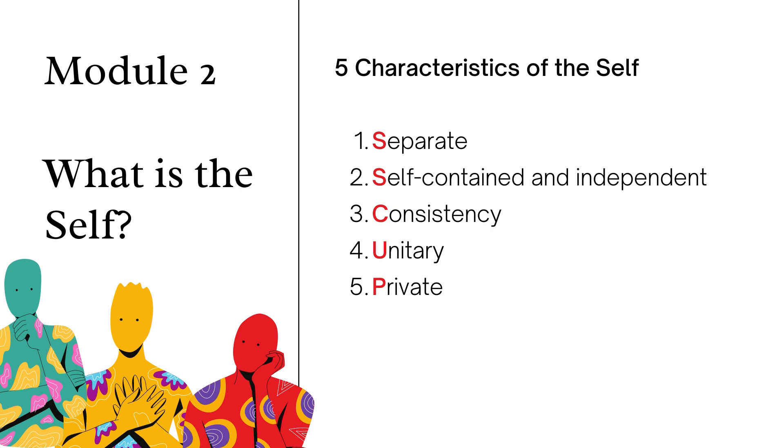Number one, the self is separate — think of the words distinct or different. The self is separate because it is different from other selves, meaning the self is unique. It is unique because it has its own identity, which is different from the identity of another self. For example, twins are distinct or different from each other; although they may have some similar physical features, they are not the same person.